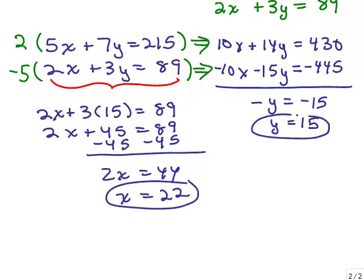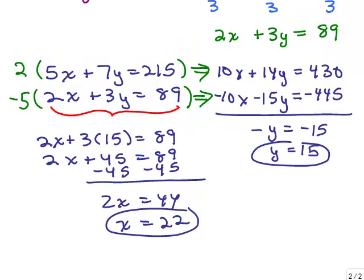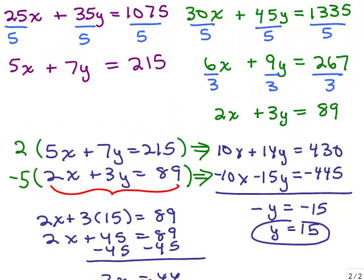Hopefully those are the two answers we want. Now we have to go back and see what X and Y stood for, and go back to the original words and see if this all makes sense. Keep in mind, this whole problem could have been done by keeping the 25X plus 35Y equals 1075, and 30X plus 45Y equals 1335, and do the addition method with just very large numbers. You should still get the same values for X and Y.